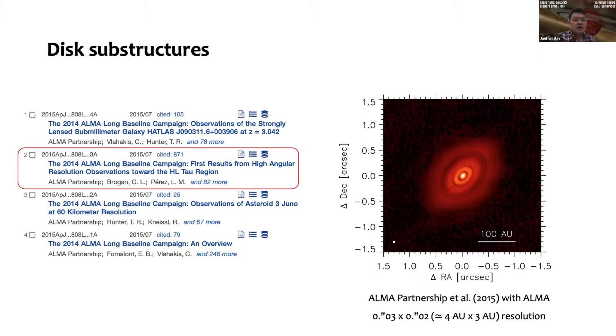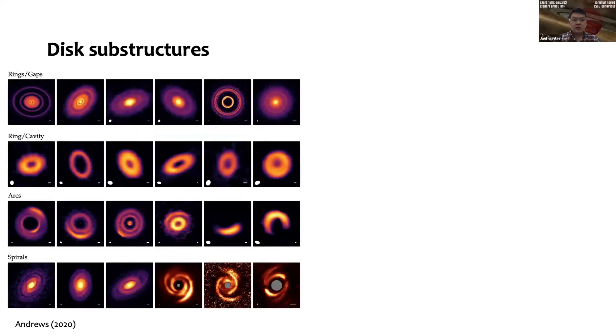This is from the 2014 ALMA Long Baseline Campaign. ALMA has been improving our understanding of the general field of astronomy, but in particular for circumstellar disks and star-planet formation. ALMA has been really pushing the boundary of our understanding. This is showing a gallery of disk substructures—this is just a subset.